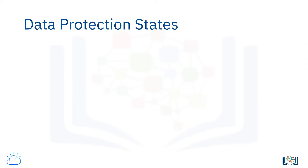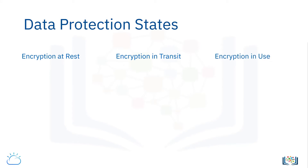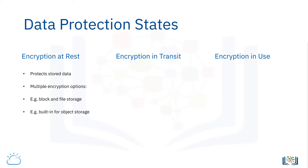Data needs protection in three states: at rest, in transit, and when it is in use. Encryption at rest protects data while it is physically stored in a database or the storage layer. Depending on the application and business requirements, there could be multiple options for encrypting data at rest, such as encryption for block and file storage, built-in encryption in object storage, and database encryption services.